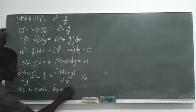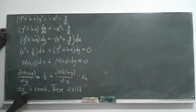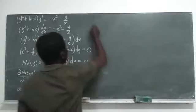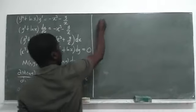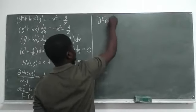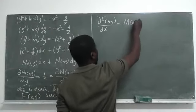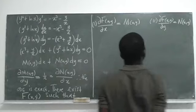Therefore the ODE is exact. Since it is exact, it implies that there exists a function F(x, y) such that: condition one — the partial derivative of F with respect to x gives us M, and condition two — the partial derivative of F with respect to y gives us N.